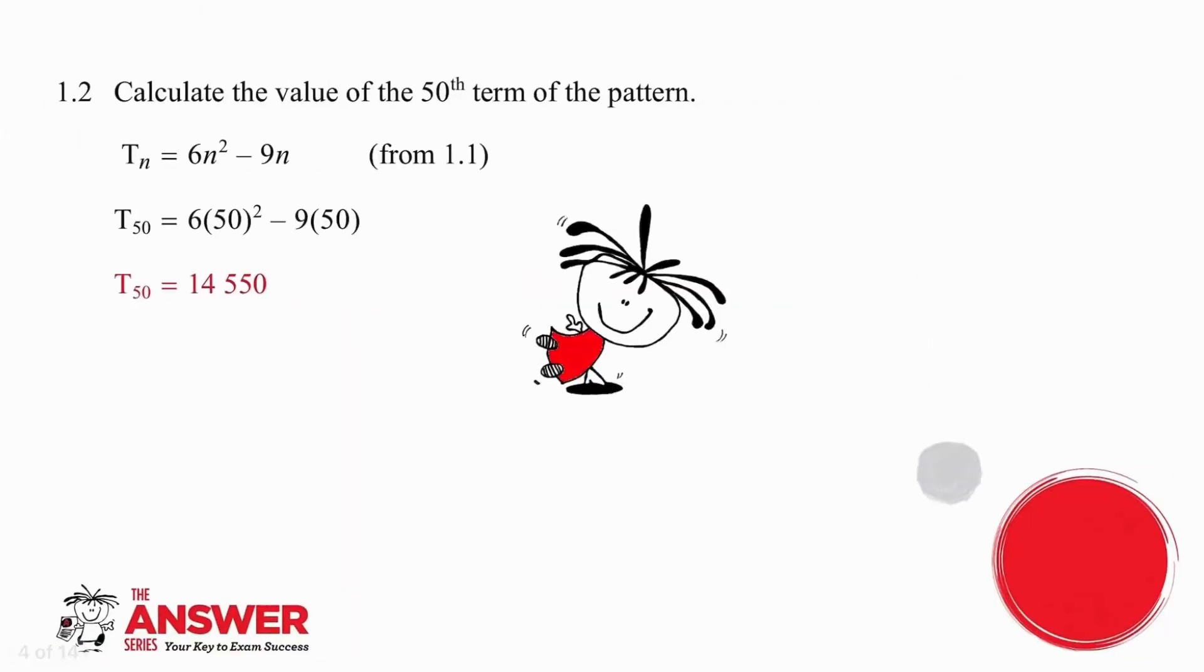In the second question, we simply have to work out the value of the 50th term. So we're going to take 50, substitute it everywhere that we previously had an n value, and we work out that T₅₀ is equal to 14,550.